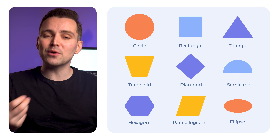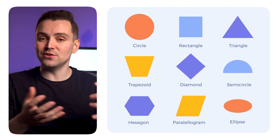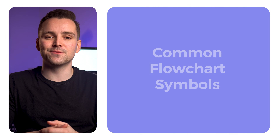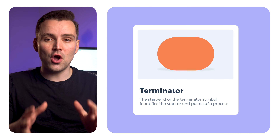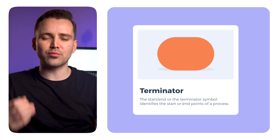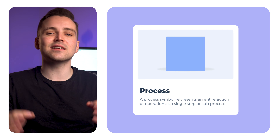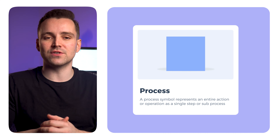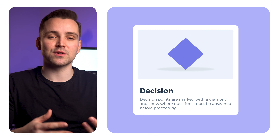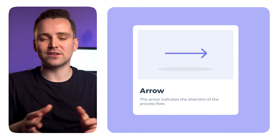No matter who builds the flowchart, everyone works from the same set of basic shapes. The most common shapes — the ones you'll find in each flowchart — are as follows. The start, end, or terminator symbol identifies the start or end points of a process. A process symbol represents an entire action or operation as a single step or sub-process. Decision points are marked with a diamond and show where questions must be answered before proceeding. This arrow indicates the direction of the process flow.